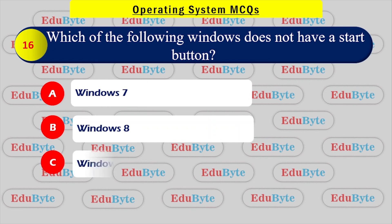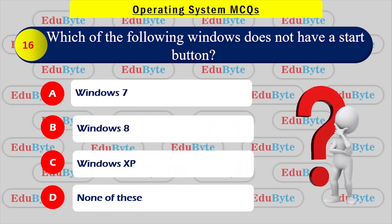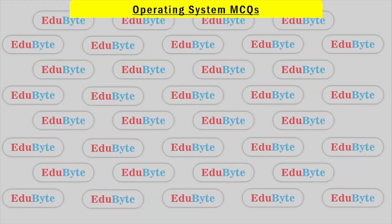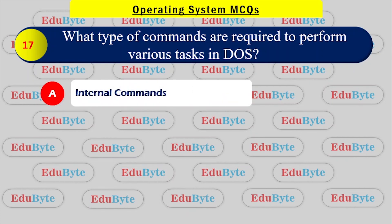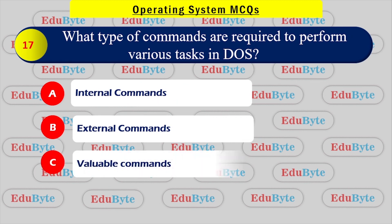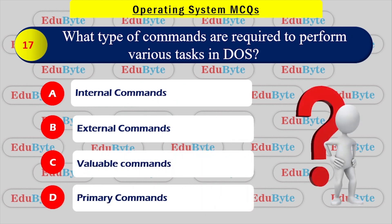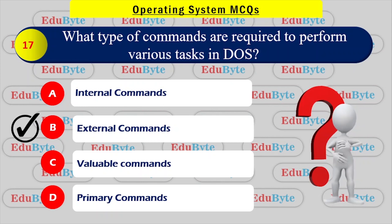Windows 8 does not have a start button. Next, what type of commands are required to perform various tasks in DOS? Options: Internal commands, External commands, Valuable commands, Primary commands. The correct answer is External commands — DOS tasks use external commands.